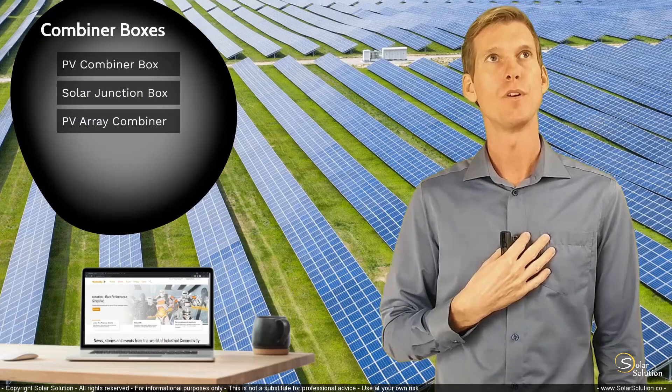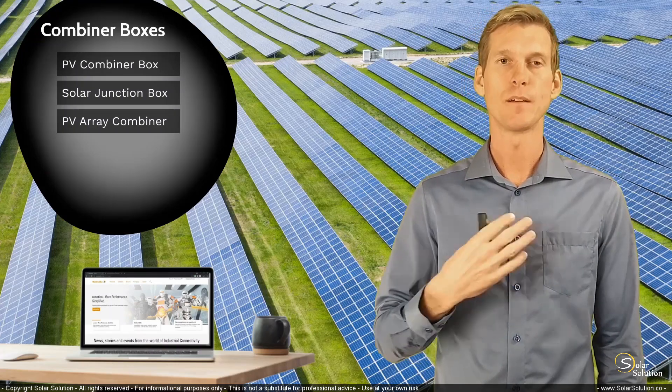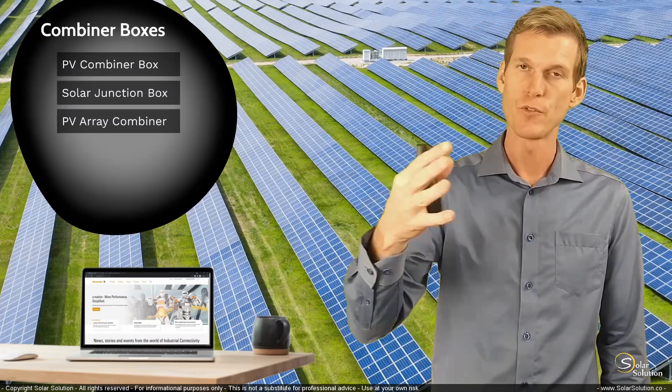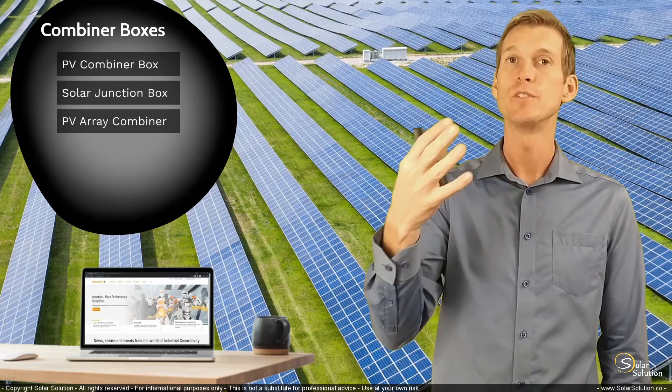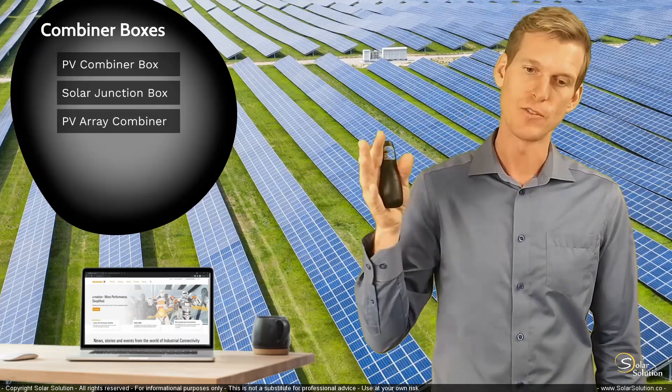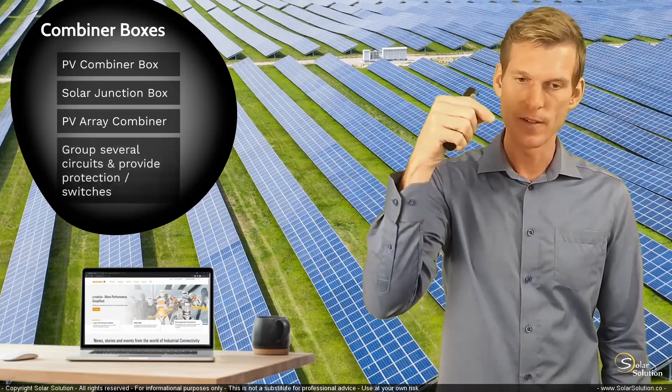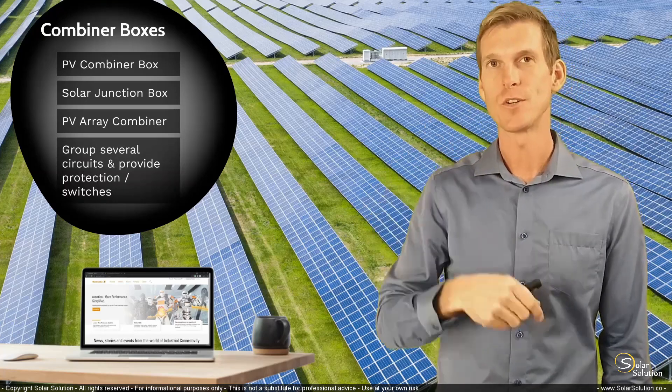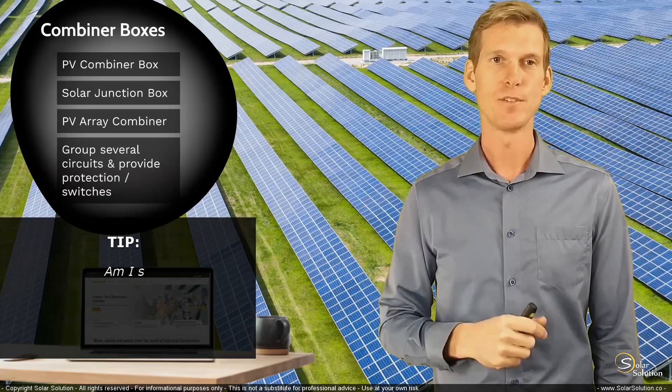The general purpose of a combiner box is that you group several circuits together in order to reduce the amount of circuits. You group several circuits together, and a fewer amount of circuits are going out towards the rest of your system.